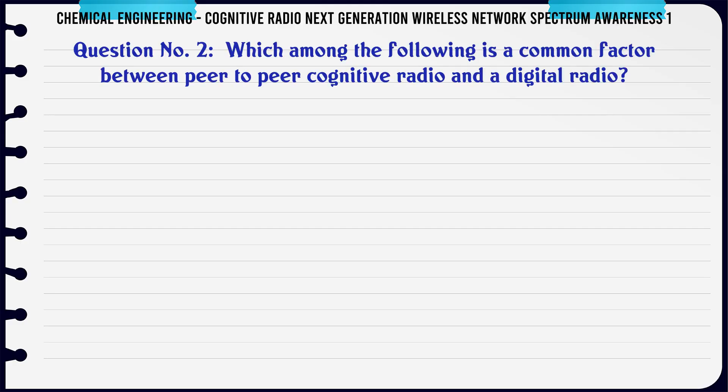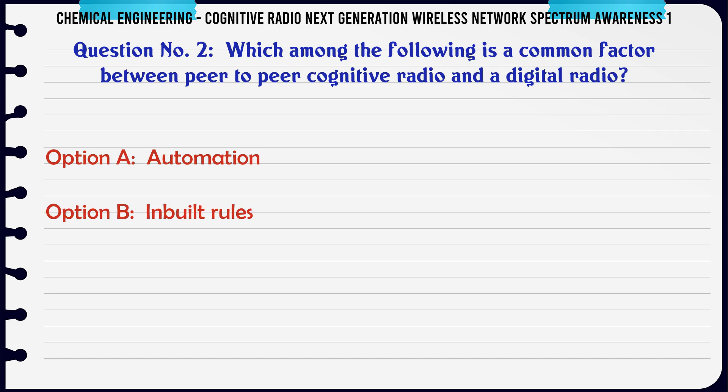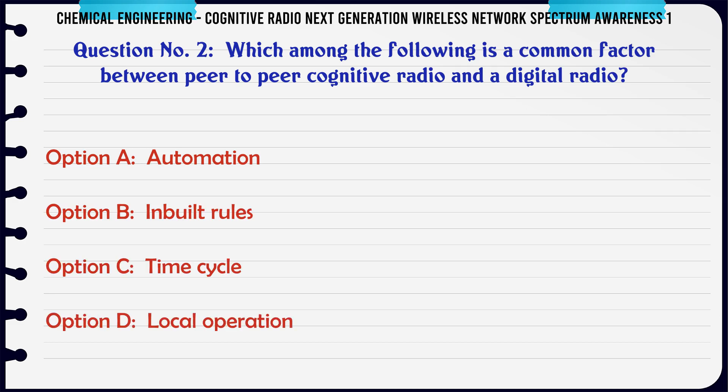Which among the following is a common factor between peer-to-peer cognitive radio and a digital radio? A. Automation. B. Inbuilt rules. C. Time cycle. D. Local operation.